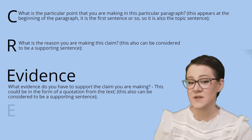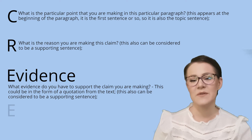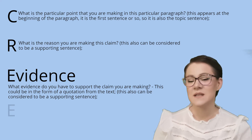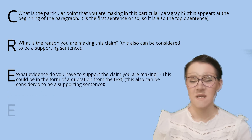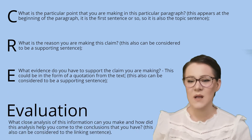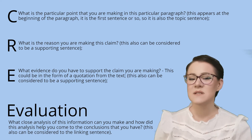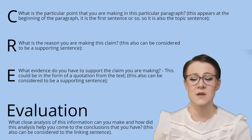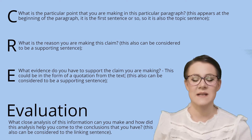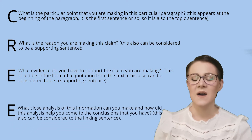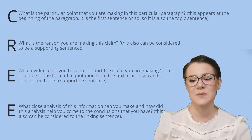Evidence: what evidence do you have to support the claim you are making? This could be in the form of a quotation from the text, and this also can be considered to be a supporting sentence. Evaluation: what close analysis of this information can you make, and how did this analysis help you to come to the conclusions that you have? This also could be considered to be the linking sentence. I understand that this might be a bit difficult to understand without having an example.